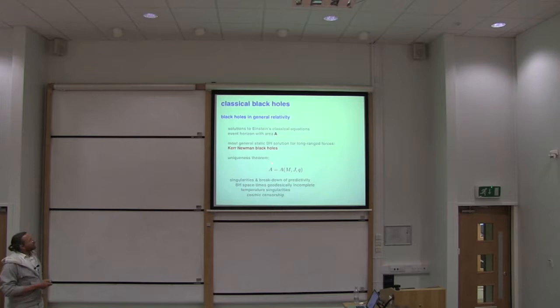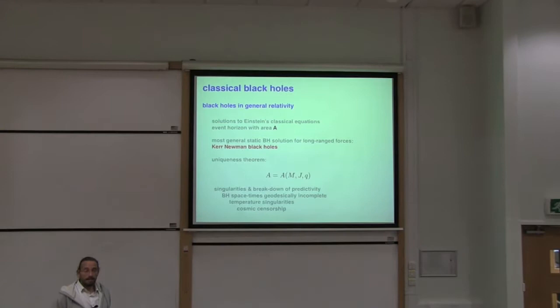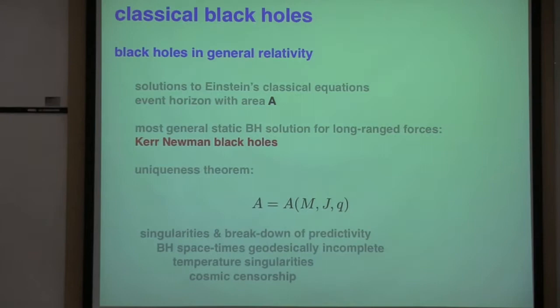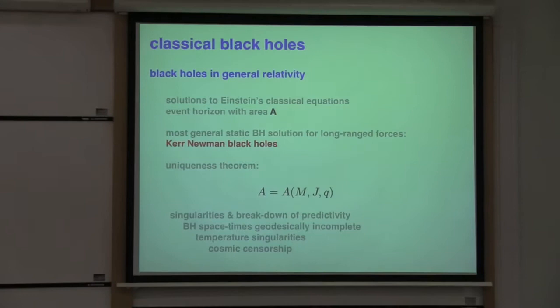Classical black holes also have a few known issues. First of all, they tend to have curvature singularities at their origin. From a physics point of view, that's not quite acceptable — you would expect that in an extension of the theory, possibly quantum gravitational corrections, will heal and cure these singularities. This technically limits the predictivity of the classical theory. Furthermore, classical black hole spacetimes are known to be geodesically incomplete — not every test particle can evolve arbitrarily into its future proper time.